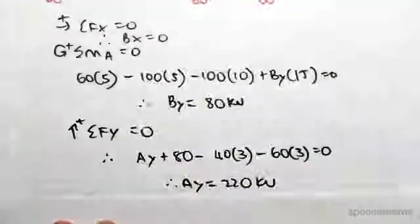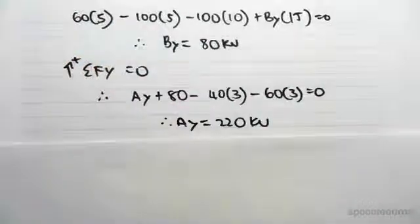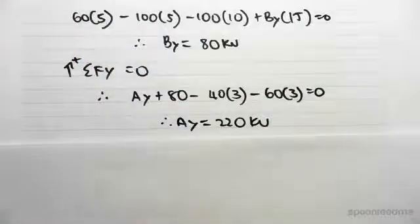Solving this, so we have 80 minus 40 by 3 minus 60 by 3, putting that over the other side we have Ay equaling 220 kilonewtons.